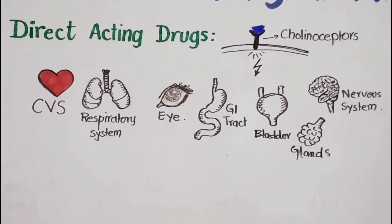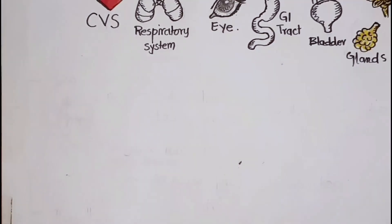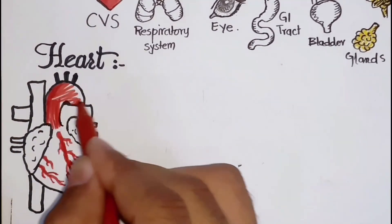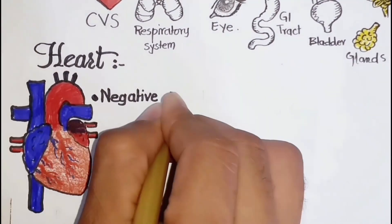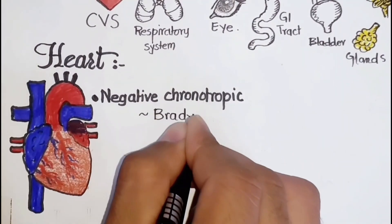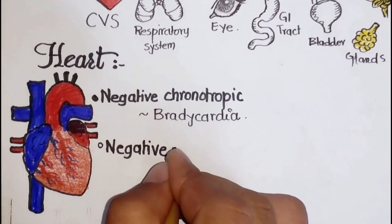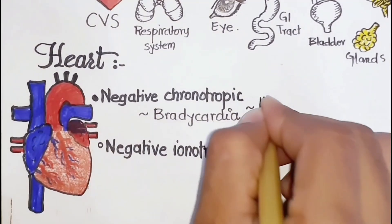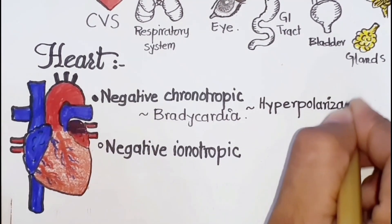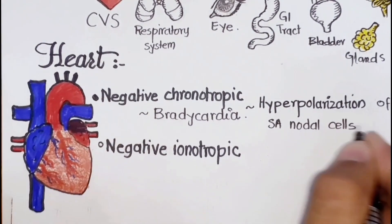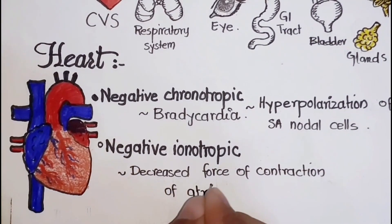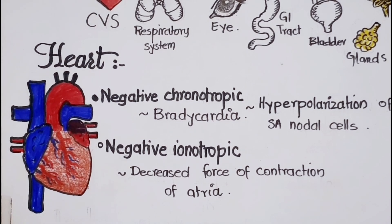The effects on the cardiovascular system are like that of vagal stimulation. Effects of cholinomimetic agents on the heart include cardiac slowing or negative chronotropic effect leading to bradycardia, and decrease in cardiac output or negative inotropic effect. The decrease in heart rate is due to the hyperpolarization of the sinoatrial nodal cells and the decrease in the rate of diastolic depolarization. The decrease in cardiac output is mainly due to a decreased force of contraction of the atria, because the ventricles have only a weak parasympathetic innervation and a low sensitivity to muscarinic agonists.